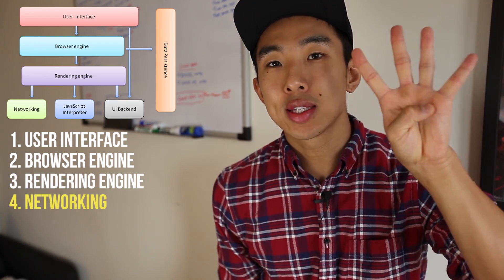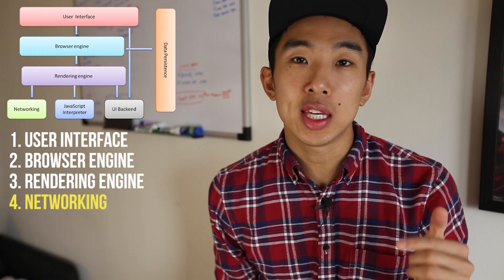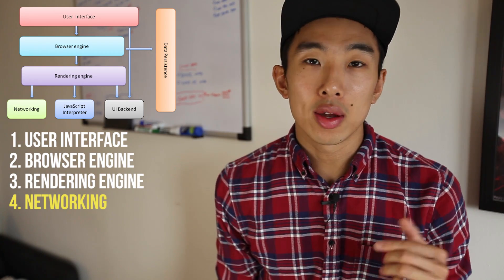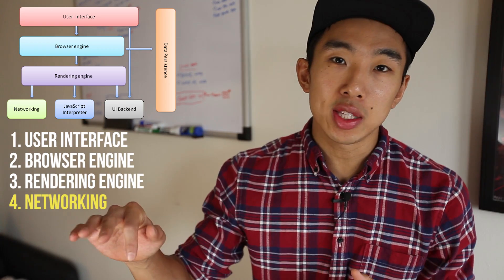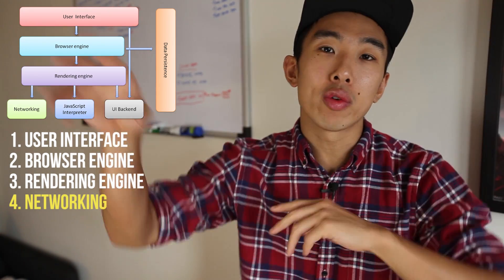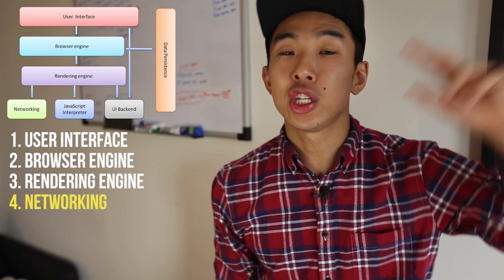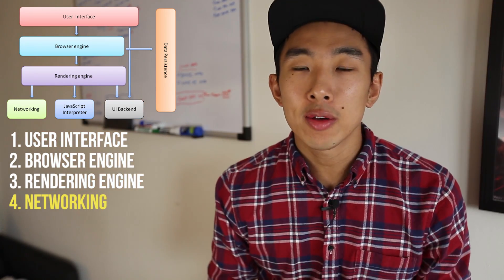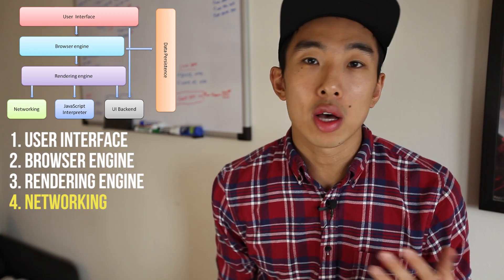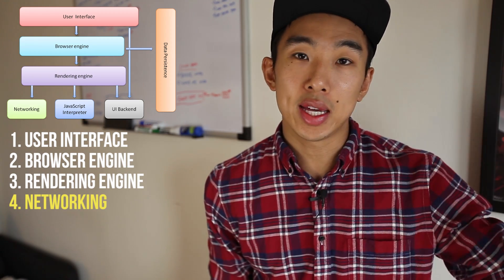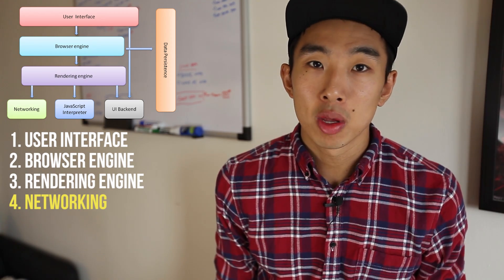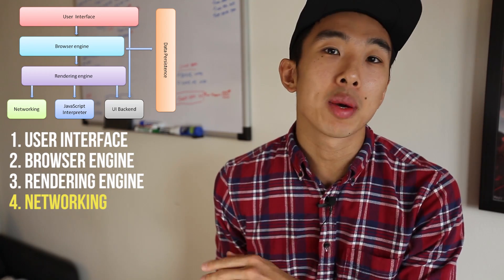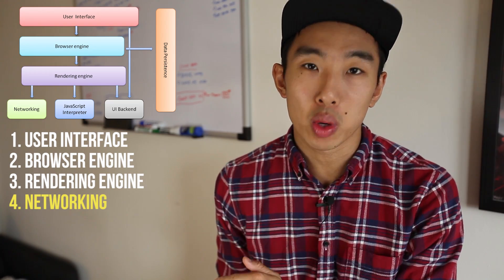Fourth is the networking block, which is one of the key components the rendering engine uses. The networking block usually uses HTTP to request stuff all over the internet — HTML here, CSS there, it just gets everything. Another thing the networking block does is make calls to DNS to resolve domain names. It's a really important part and handles a lot of networking.